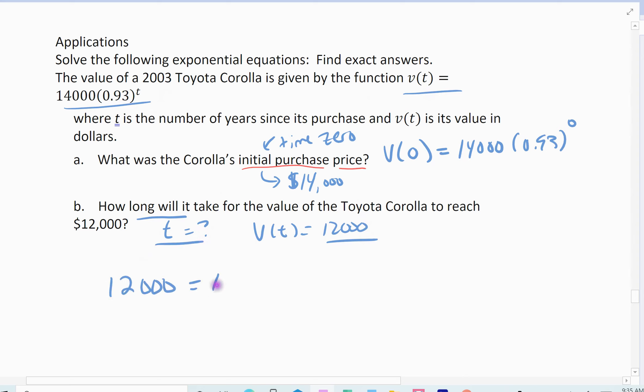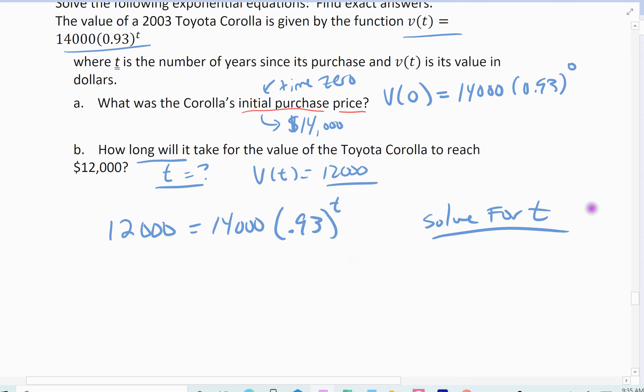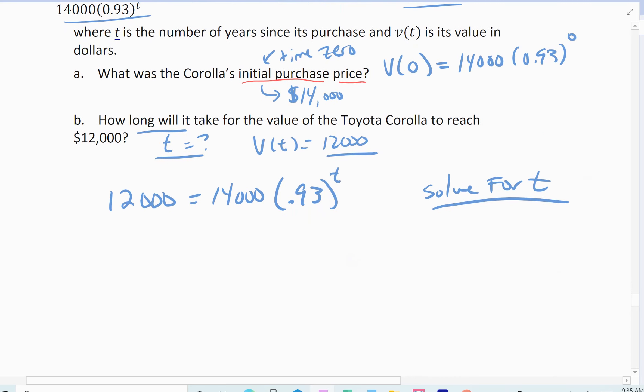So 12,000 equals my 14,000 times 0.93 raised to this t and solve for time. And so this is where we have to use our methods that we did before. So isolate the term with the time in it. So divide by the 14,000 on both sides.